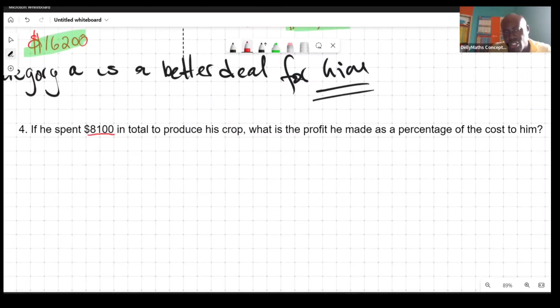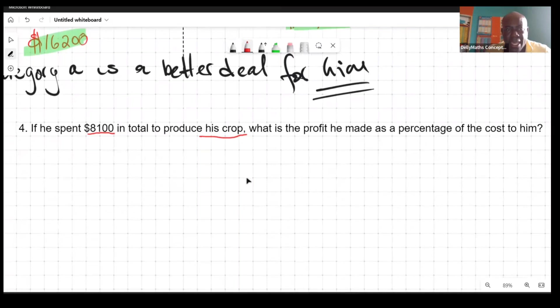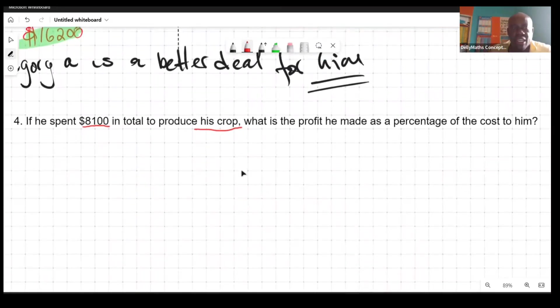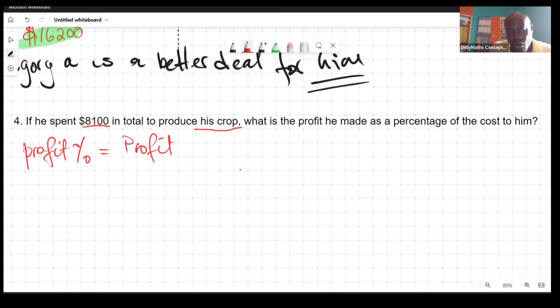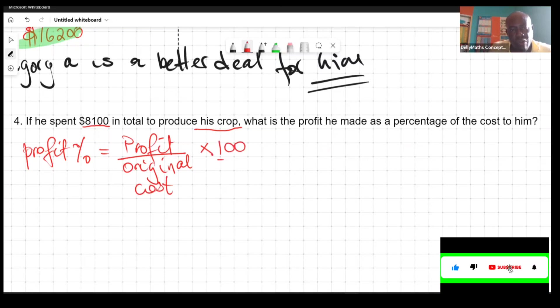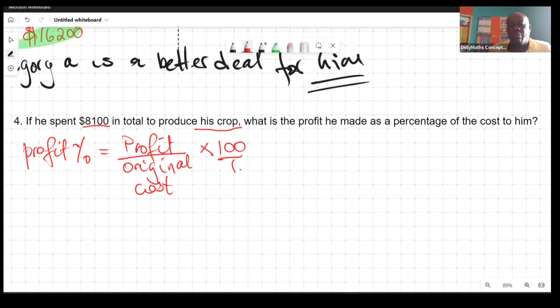If he spent $8,100 in total to produce his crop, whether it is on fertilizer, insecticides, pesticides to get the place clean, water and everything comes up to $8,100, what is the profit he made as a percentage of the cost to him? They want to know the profit percentage. There is a formula for profit as a percentage. The profit percentage is going to be the profit over the original cost, and you multiply this by 100.